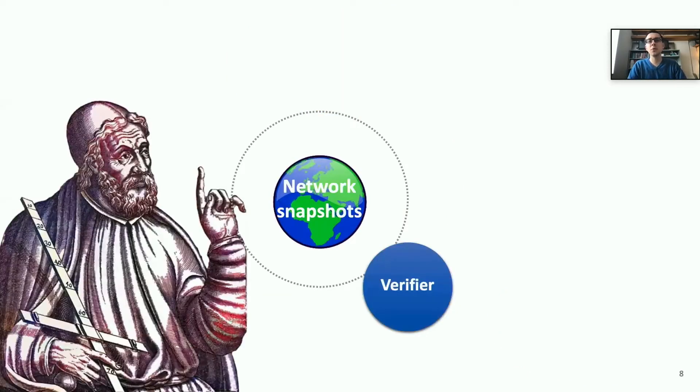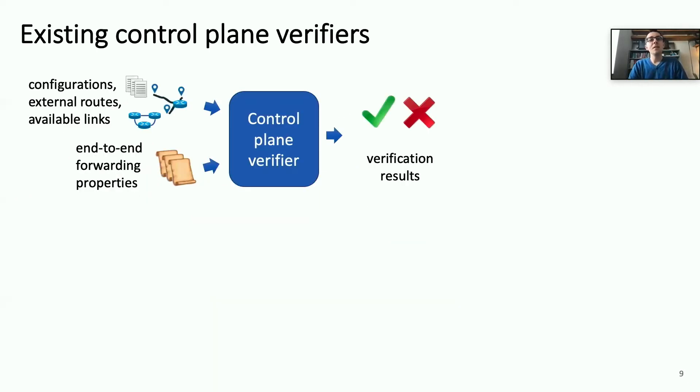However, existing control plane verifiers don't revolve around changes. They revolve around network snapshots. We argue that this is not the right model for network verification, much like the Ptolemaic system is not the right model of the universe. To understand a little bit more why we need a different approach, let's take a look at existing control plane verifiers in more detail.